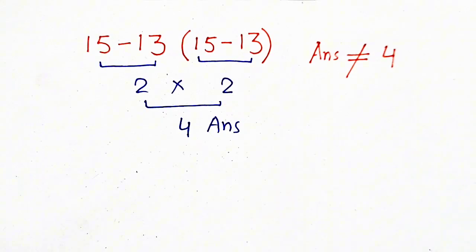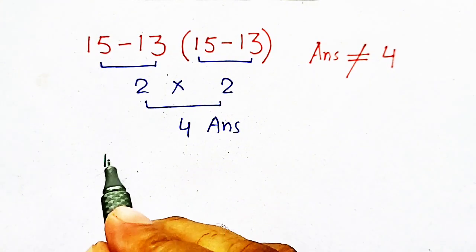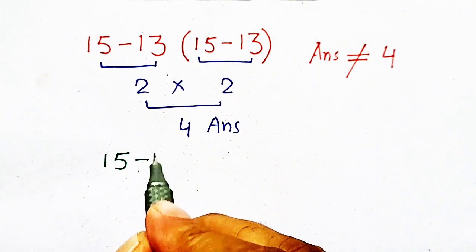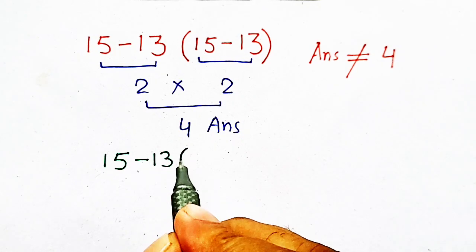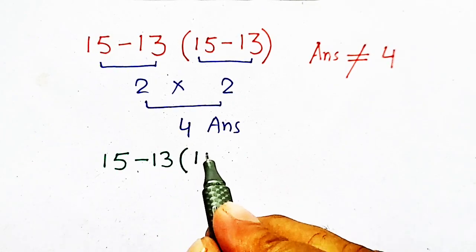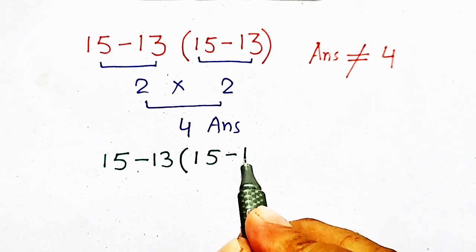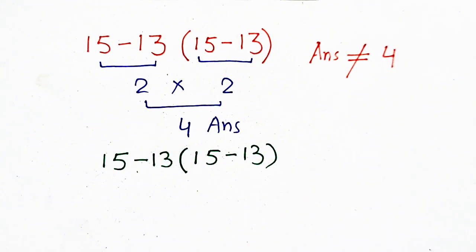Now, I will solve it again by order of operation. So, I have to solve 15 minus 13 times 15 minus 13.